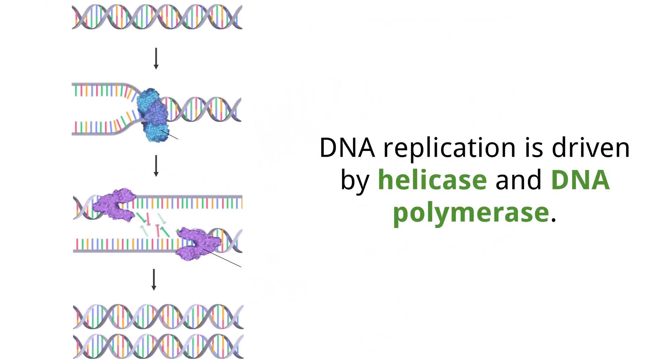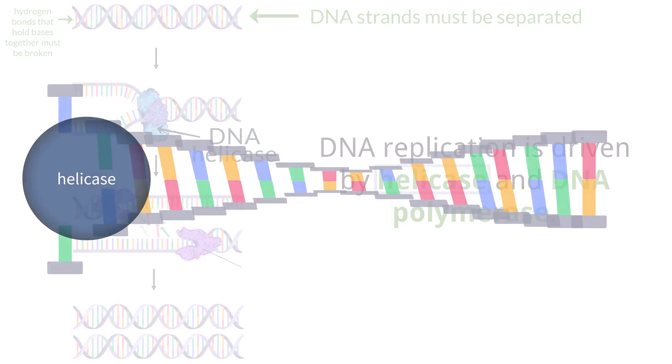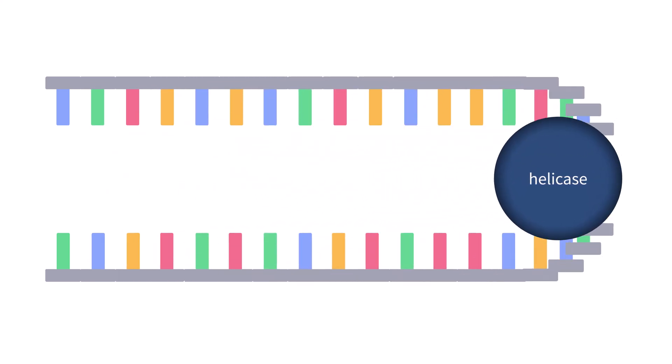So, we know a bit about replication — what it does and how the original DNA strand is conserved. Let's now dive into a few more details about how the process works at the molecular level. In order for DNA replication to begin, the two strands of the original DNA molecule must be separated, meaning the hydrogen bonds that hold the bases together must be broken. This separation is performed by the enzyme helicase, which moves across the strand separating the bases by breaking those hydrogen bonds and unwinding the DNA.